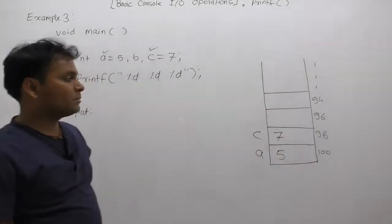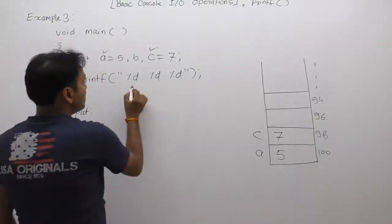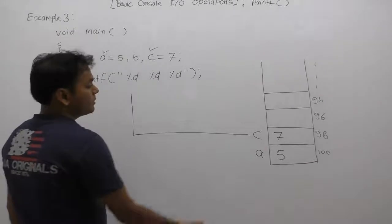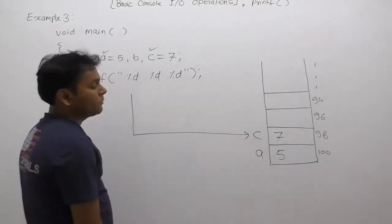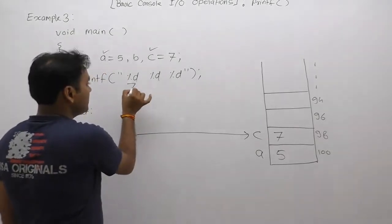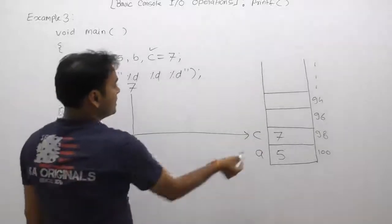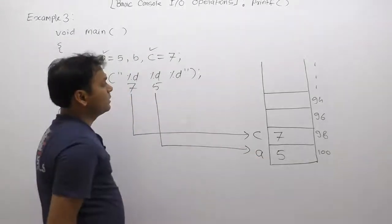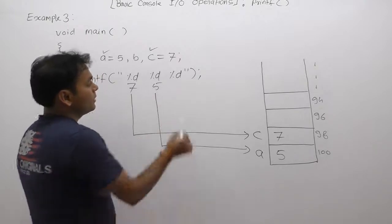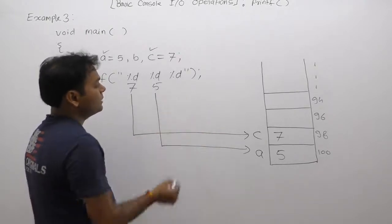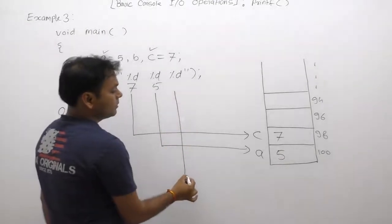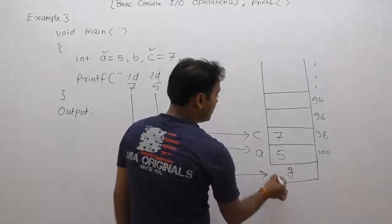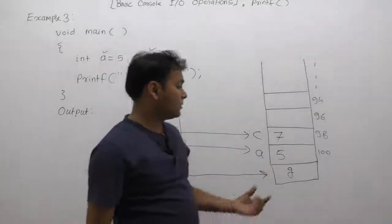There is no memory space allocated for b. Therefore, in the first position of the print statement, we replace it with the first top element, which is c1. In the next position, we replace it with the next top element, which is five. But for the third position, there is no memory space allocated, so the value at that place may be considered garbage — some unknown value we cannot predict.